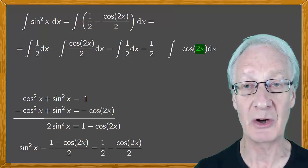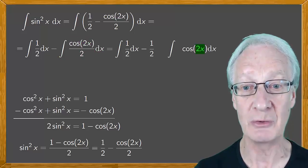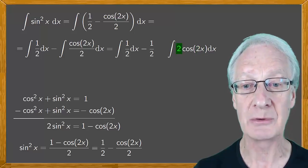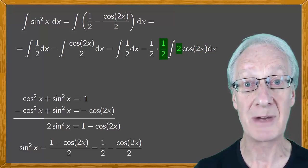That leaves us with the integral of cos 2x. And since the derivative of 2x is 2, we need this 2 in the integral. And to compensate, we multiply by a half.